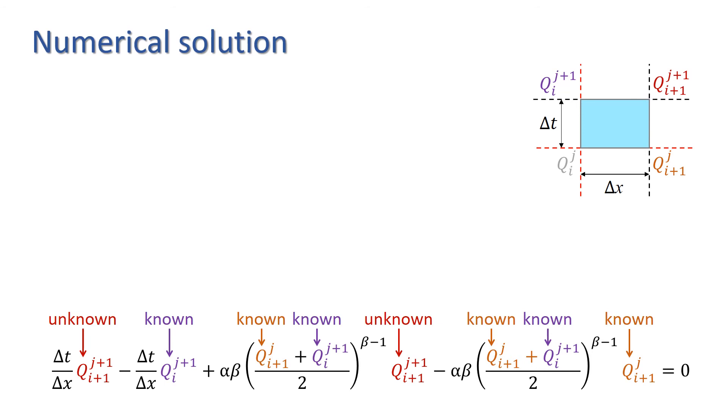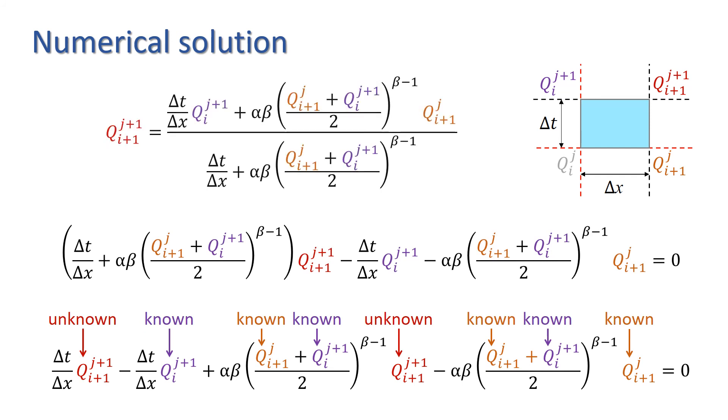Collecting these together, we have this expression, which can be rearranged to give a single expression for Q_i+1j+1 in terms of parameters with known values.